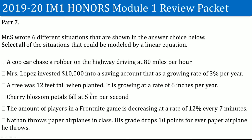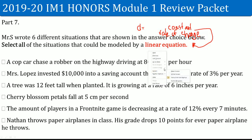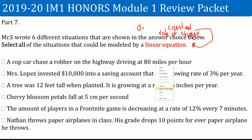Part 7 — select all situations that can be modeled by a linear equation. A linear equation has a common difference and a constant rate of change. The first situation: a cop chases a robber on a highway driving at 80 miles per hour. That is 80 miles per one hour and is constant, so this works — it is linear.